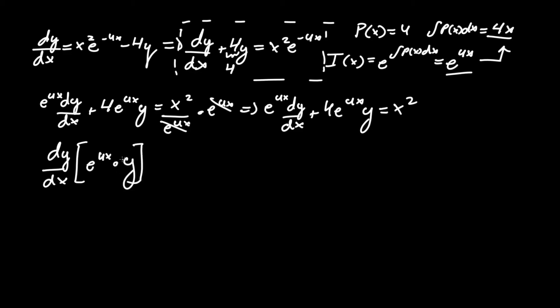All you have to do for the left hand is just I of x. So, if we look at this product rule, you can see that the derivative of e to the 4x is just 4 e to the 4x times y, plus dy/dx times e to the 4x. This checks out, and that equals x squared.